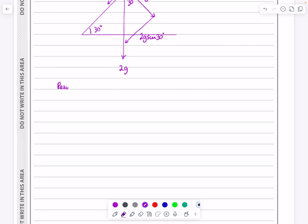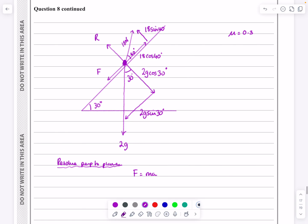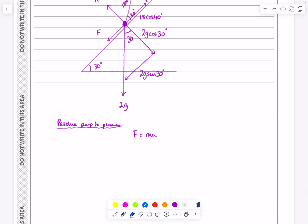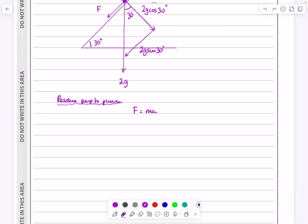Let's make it really clear to the examiner what we're going to do then. So we're going to resolve perpendicular to the plane, which was those last three forces I was looking at. They're all in equilibrium. I've got that the 18 sin and the r are balanced out by this 2g cos going in the opposite direction. So I'm going to say r plus 18 sin 40 is equal to 2g cos 30.